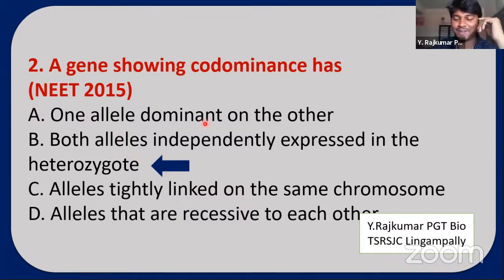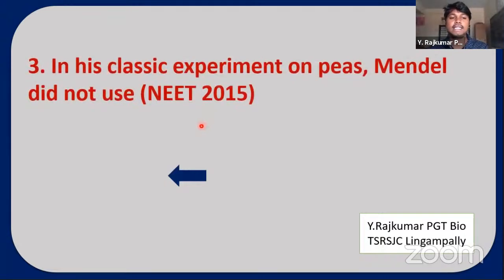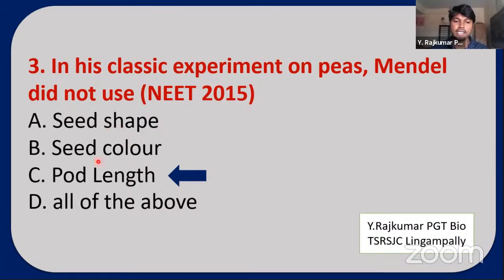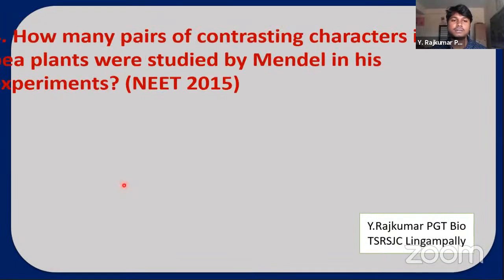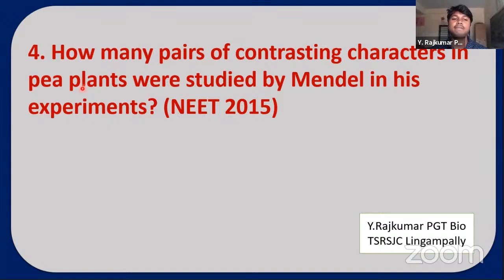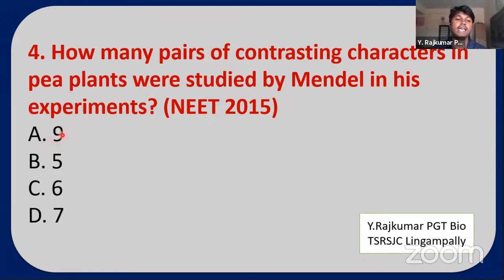Next NEET question: In his classic experiment on peas, Mendel did not use: seed shape, seed color, pod length, or all of the above? The answer is pod length — Mendel used pod color but not pod length. Next question: How many pairs of contrasting characters in pea plants did Mendel study? Options: 9, 5, 6, or 7. The answer is seven.